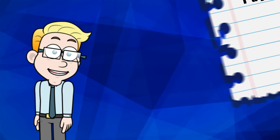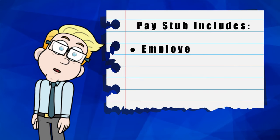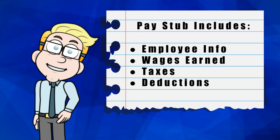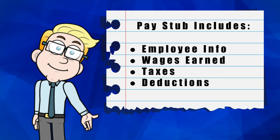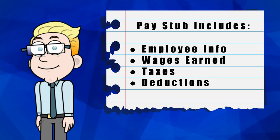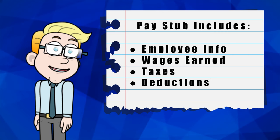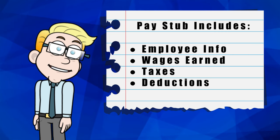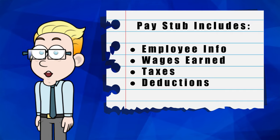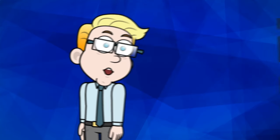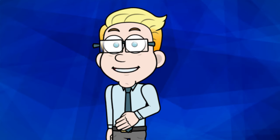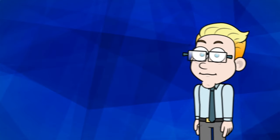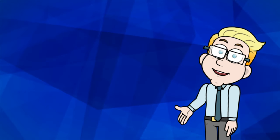Pay stubs show details about your salary for each pay period. Although the information on a pay stub can vary, it usually includes employee and company information, the wages earned for the current pay period as well as the year to date. A section is often dedicated to a tax breakdown, which shows how much an employee pays for state and federal taxes, and a section also shows benefits deductions. Most importantly, the pay stub shows how much you earn.